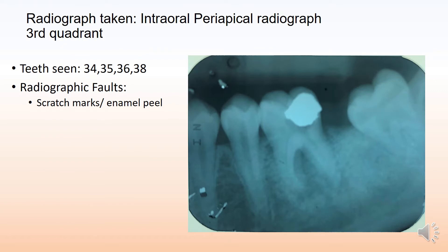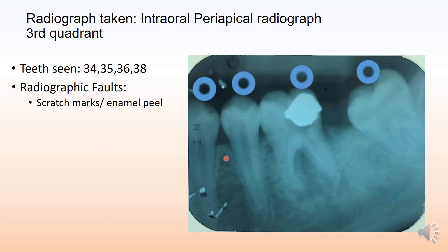Today we have a radiograph taken for the third quadrant. This is an intraoral periapical radiograph and the teeth seen are 3-4, 3-5, 3-6 and 3-8.